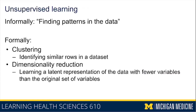However, when you have a thousand variables, clustering is a lot more difficult because there are almost too many variables for you to scan manually. So clustering algorithms aim to group patients together that are similar to each other based on a combination of their variables. Another type of unsupervised learning task is dimensionality reduction, which unlike clustering — focused on identifying similar rows — is really about learning a representation of data that requires fewer variables.